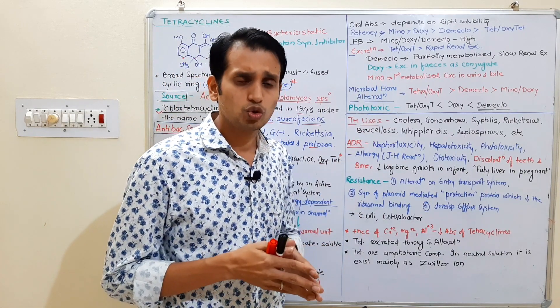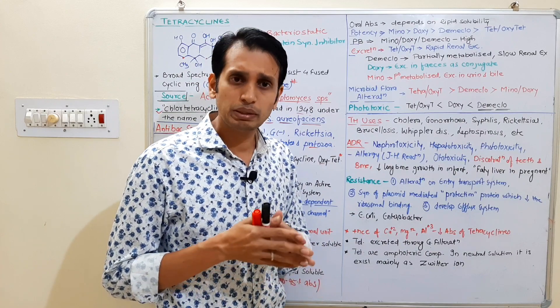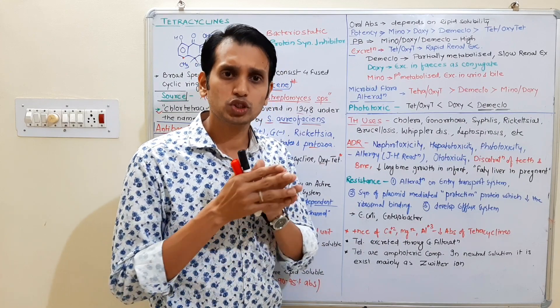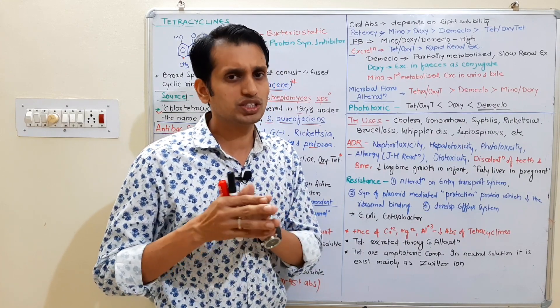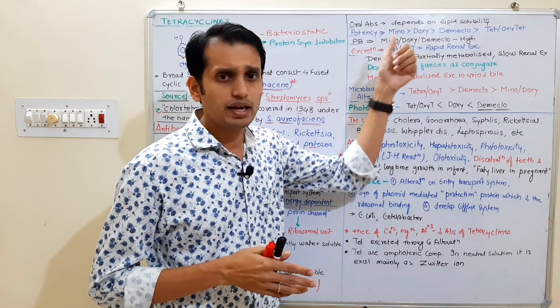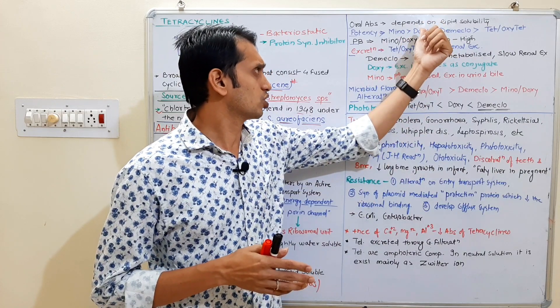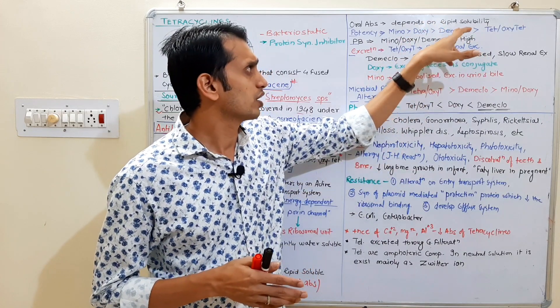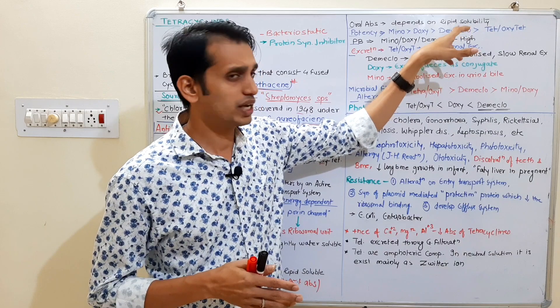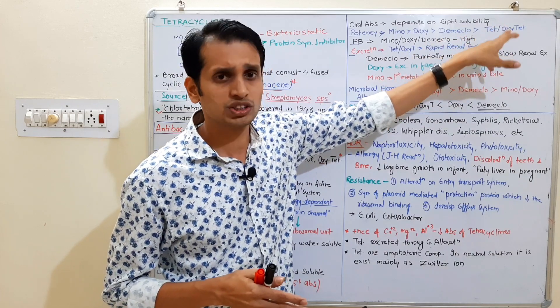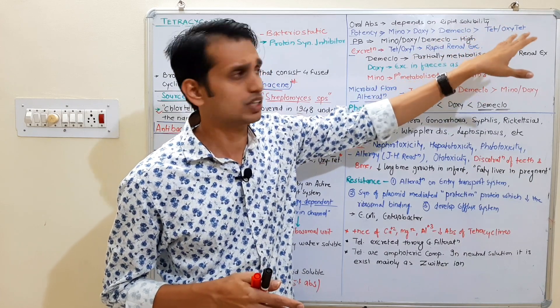Potency depends on lipid solubility — high lipid solubility means high potency. The order of potency is: minocycline has more than doxycycline, which has more than demeclocycline, which has more than tetracycline and oxytetracycline. This is the order of potency.